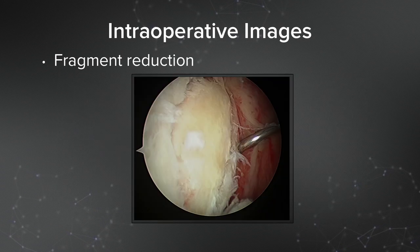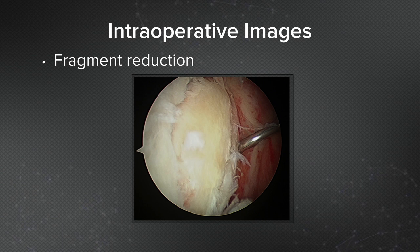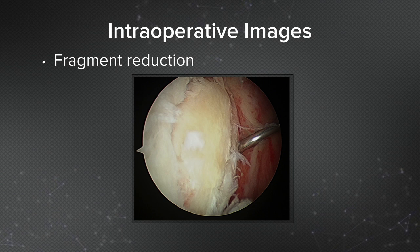Here is the fragment reduction. I've used a curved suture lasso — I like using it because it has a sharp pointed end, so you can spear and pin the fracture fragment in place. You can see here I have an anatomic provisional reduction just with the suture lasso.